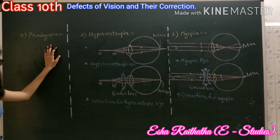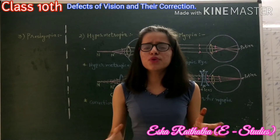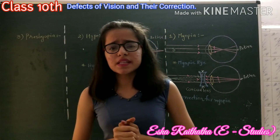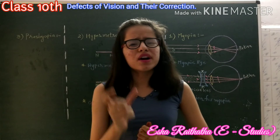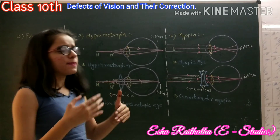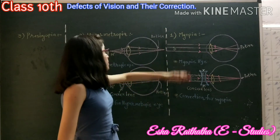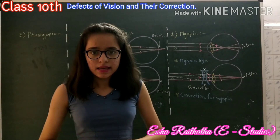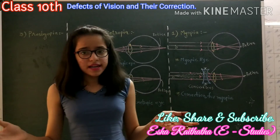Third, presbyopia. The power of accommodation of the eye decreases with aging. For most people, the near point gradually recedes. They find it difficult to see nearby objects comfortably and distinctly without the use of corrective eyeglasses. This defect is known as presbyopia and it occurs due to the weakening of ciliary muscles. Sometimes people suffer from both myopia and hypermetropia, and for these conditions they should use bifocal lenses, which have both concave and convex lenses, correcting both defects.